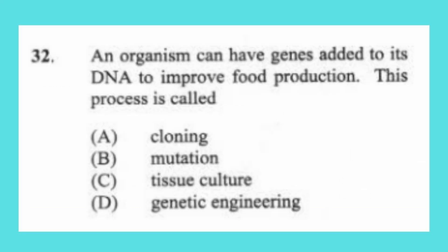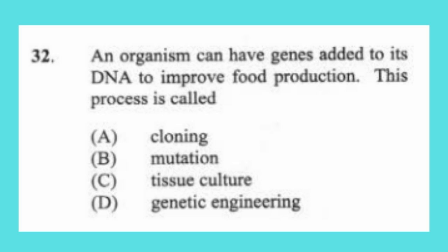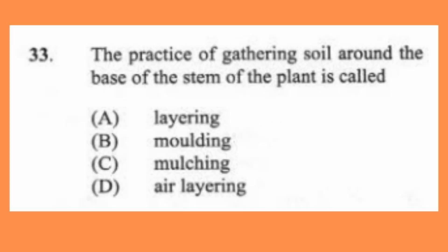Question 32: An organism can have genes added to its DNA to improve food production. This process is called (a) cloning, (b) mutation, (c) tissue culture, (d) genetic engineering. The answer is D, genetic engineering. When you are speaking about altering DNA, that is genetic engineering.